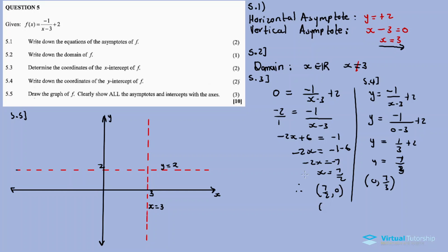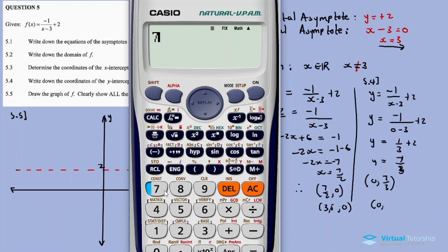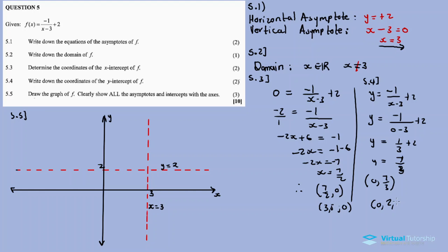7 over 2 is 3.5. Let's check: 7 over 3 equals 2.3 recurring. If the hyperbola is in the fourth quadrant as well as the second quadrant...